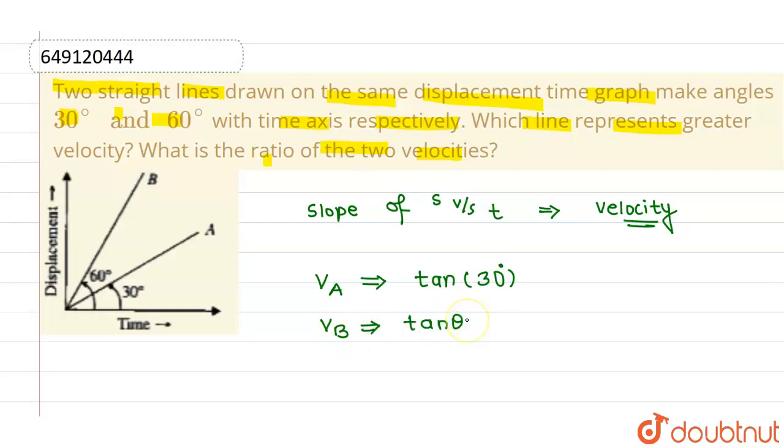Which is 60°, so this is tan 60°. Now, value of tan 30° is nothing but 1/√3, and the value of tan 60° is √3.